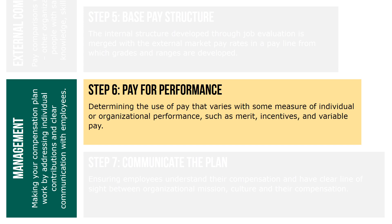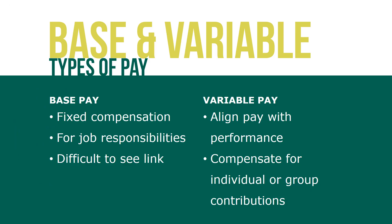In considering pay for performance, you will determine the use of pay that varies with some measure of individual or organizational performance, such as merit, incentives, and variable pay. Compensation typically consists of two forms: base and variable pay. Base pay is the fixed compensation paid to an employee for performing specific job responsibilities. Although base pay is a vital component to any total rewards package, variable pay is also important.